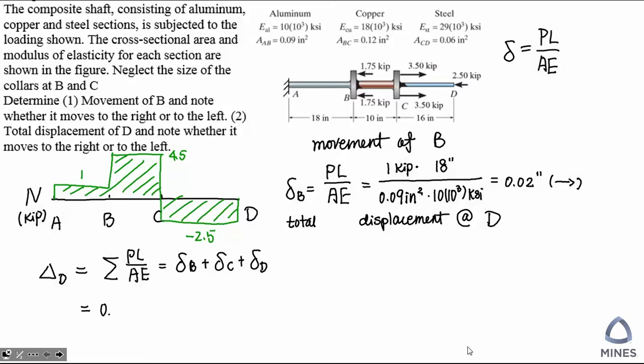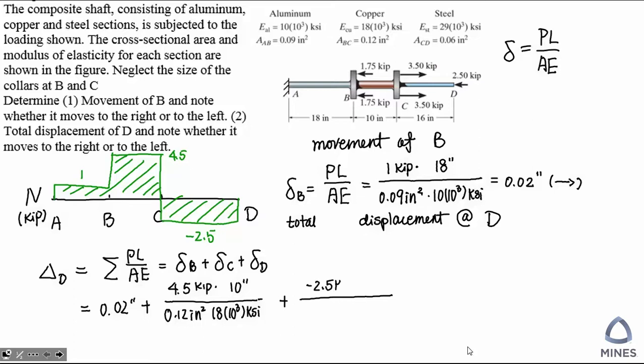We already calculated the movement of B. Now let's calculate the total length change in the BC segment using PL over AE. The internal force P in BC, from the axial load diagram, is 4.5 kip, and the length is 10 inches. For the total length change in the CD segment, it is under compression, so it is better to use a negative value here so that we account for the shortening of the length.